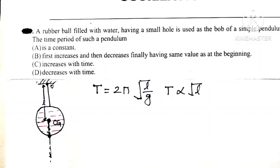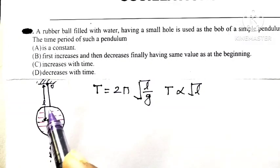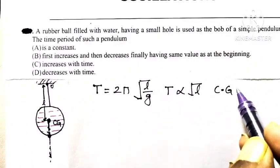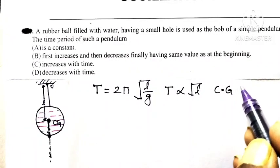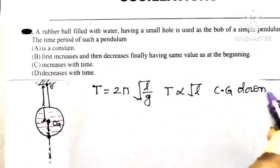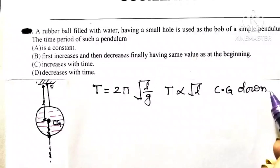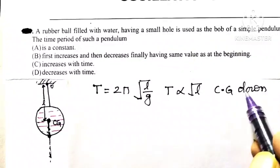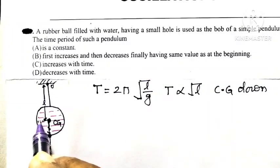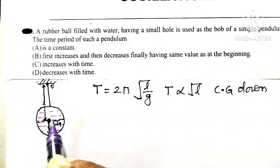As water level in a ball goes on decreases, then center of gravity of the ball goes in a downward direction. So as center of gravity initially goes downward, and then what happens when water level reaches to half?